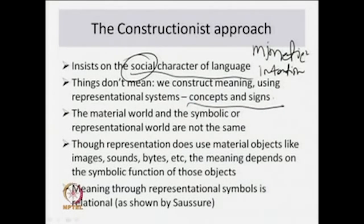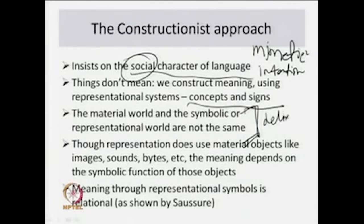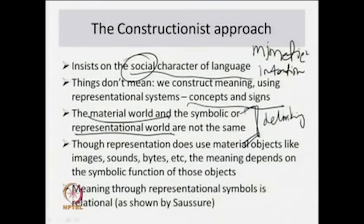The constructionist approach says language is the vehicle for representation, but we have to understand its social character. Here, things do not simply mean — we construct meaning using representational systems, concepts, and signs. The material world and the symbolic or representational world are not the same. This is a very important statement — the final delinking of the two domains: the material world and the representational world. This is a very radical thing to say when we consider cultural studies.